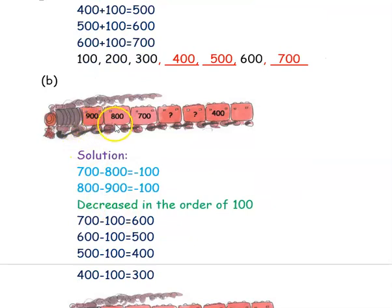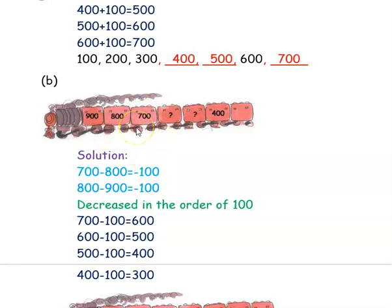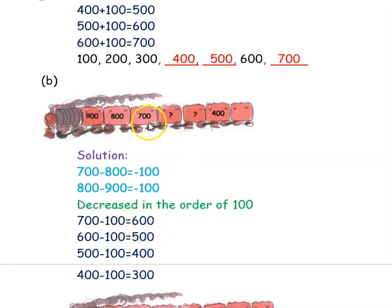The second question is a number train. The numbers given in the number train are 900, 800, and 700. If you observe the number train, the numbers are in decreasing order. So we'll see how many each number is decreasing by: 900, 800, 700 — it is decreasing in the order of 100. So from 700, if you subtract 100 you will get 600. So 700 minus 100 is 600, and 600 is the number next to 700.